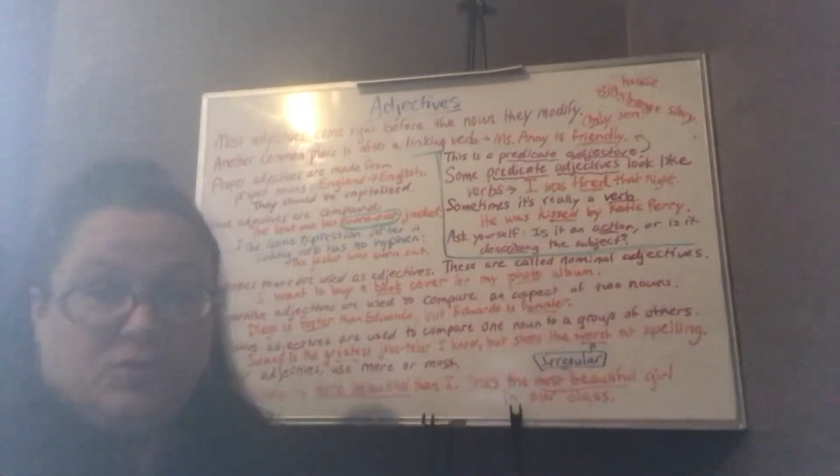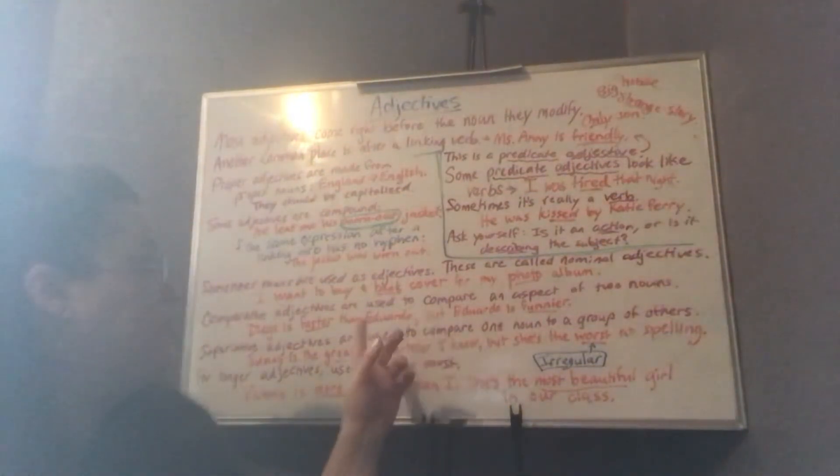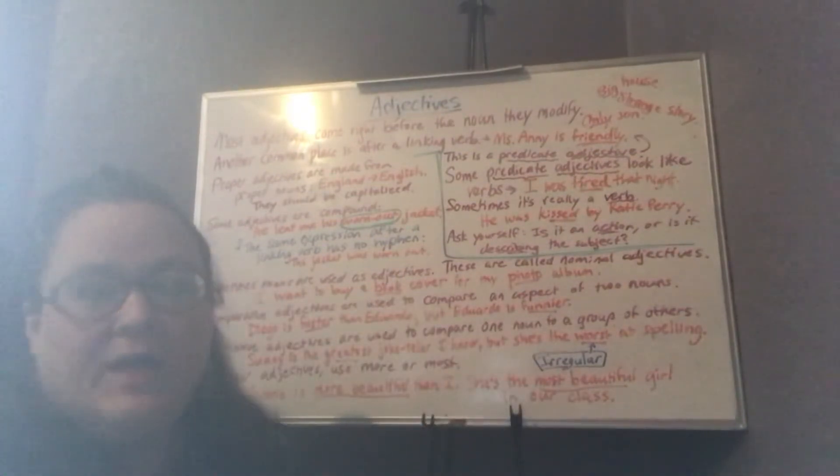This is an irregular form. Some adjectives take irregular forms for their comparative and superlative. For example, bad would be the normal form. We call that the positive form. That can be confusing, right? And then worse W-O-R-S-E would be the comparative form. And then worst is the irregular form of that verb in the superlative.